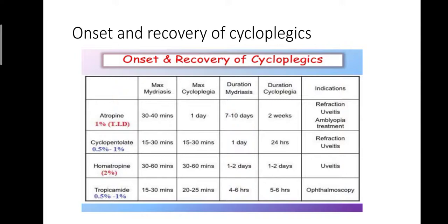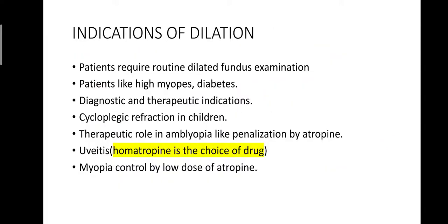A tabular comparison of cycloplegics is provided to make learning easy. The table lists atropine, cyclopentolate, homatropine, and tropicamide with their maximum mydriasis, maximum cycloplegia, duration of mydriasis, duration of cycloplegia, and key indications. Next are the indications for dilation.